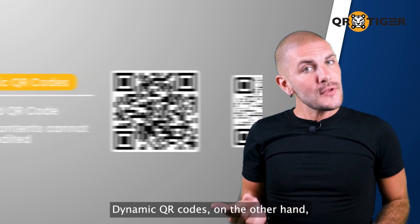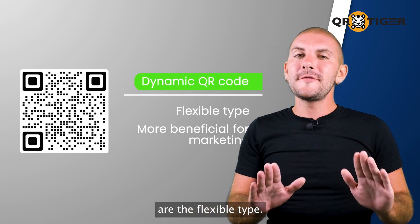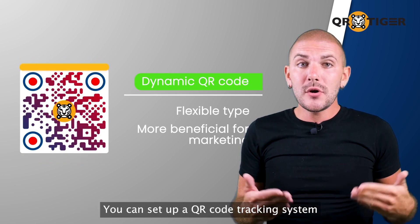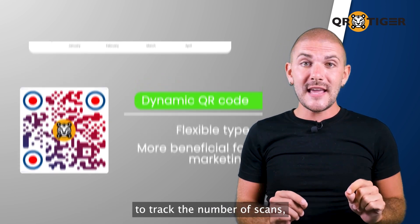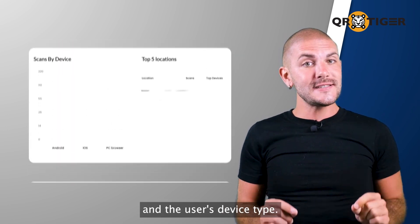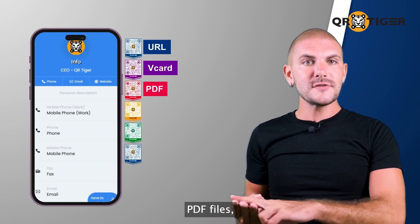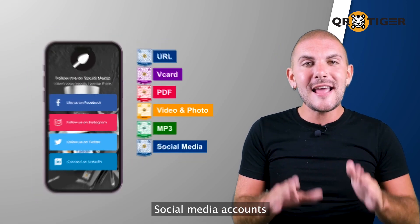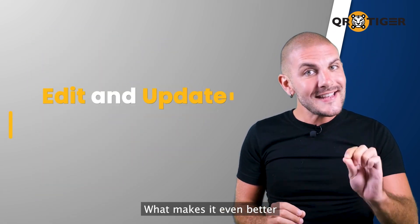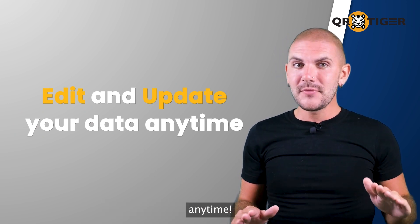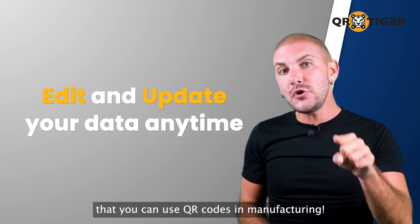Dynamic QR codes, on the other hand, are the flexible type and are your best bet for marketing. You can set up a QR code tracking system to track the number of scans, when the user scans, their location, and the user's device type. You can generate QR codes for your URLs, vCards, PDF files, videos, photos, MP3s, document files, social media accounts, and many more. What makes it even better is that you can edit and update your data anytime.